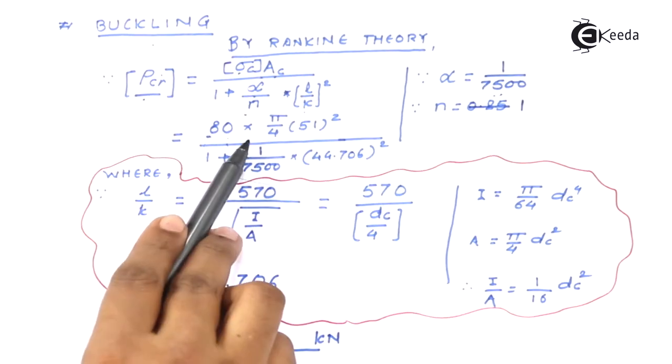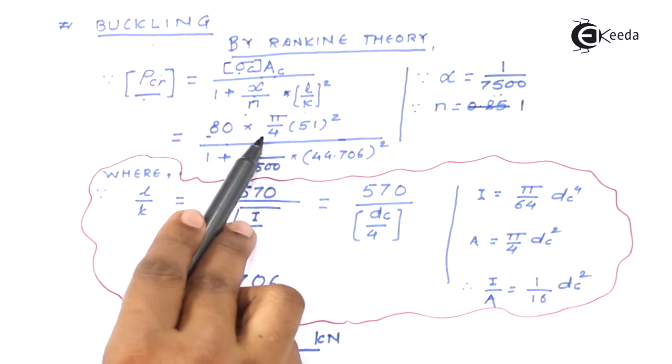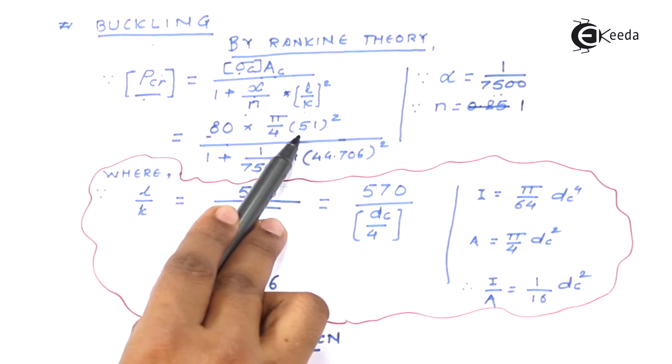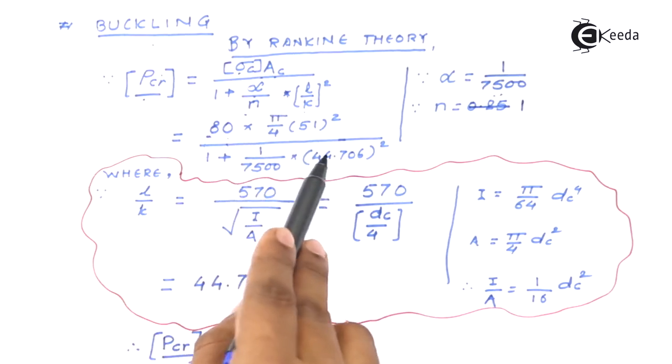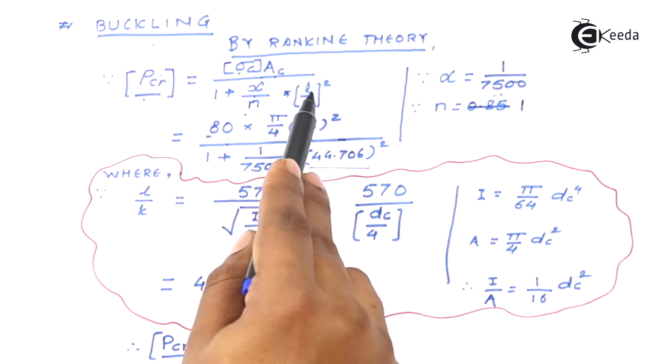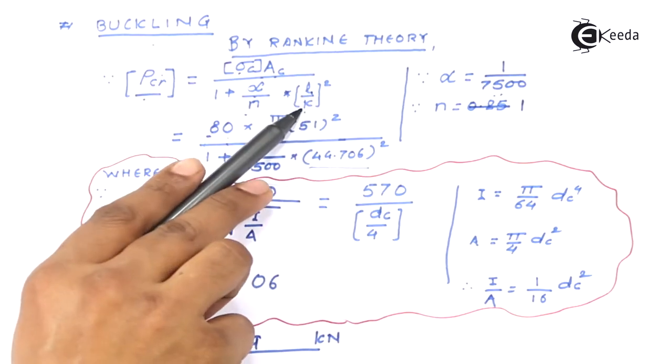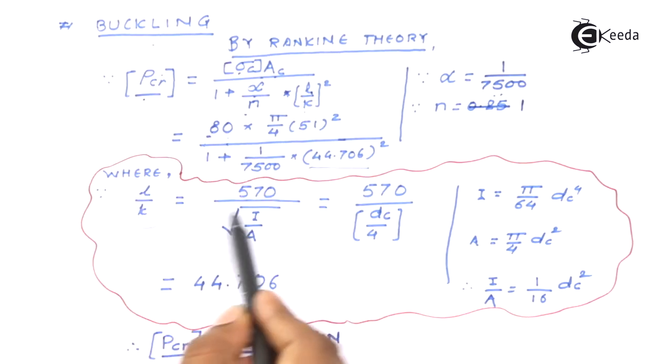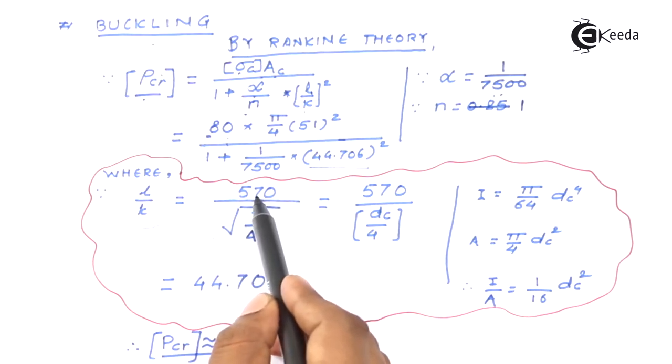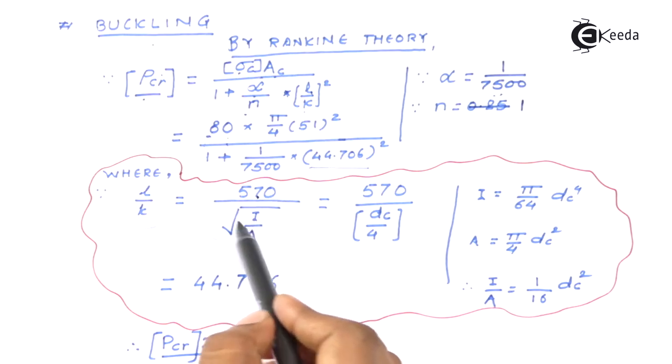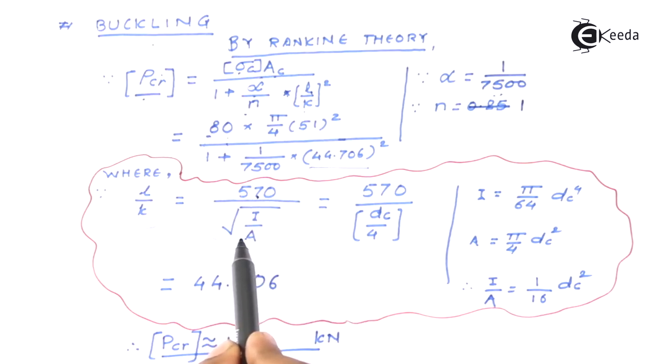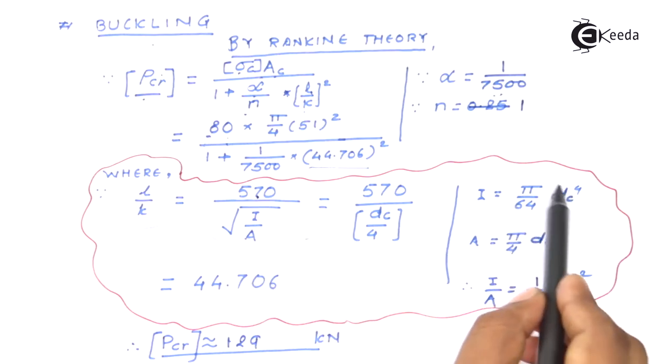There are two aspects we need to understand. We already know that this is the allowable value of stress and that's why I have used 80. The value of area we consider from the core diameter point of view. Then this important thing is the ratio of the length with the radius of gyration. The relation is given in this manner. The length that we have found out is somewhere around 570.